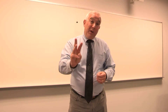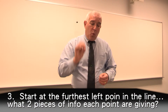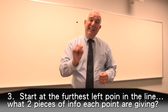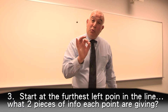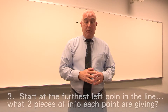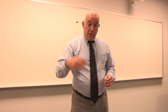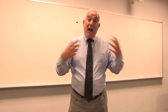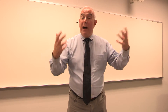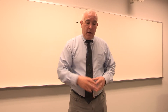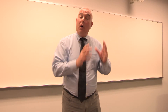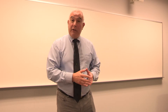Step three: look one at a time at each point inside the economics L. Each one of those points is telling you two pieces of information. The upper left point says that a high price motivates the consumer to buy a low quantity. And the lower right point says that a low price will lead to a high quantity demanded.